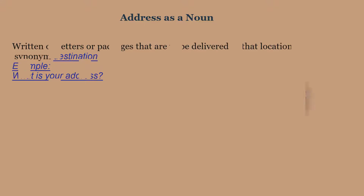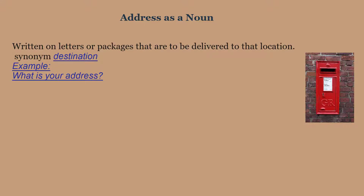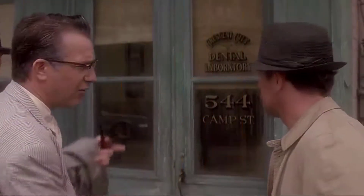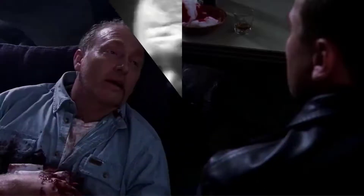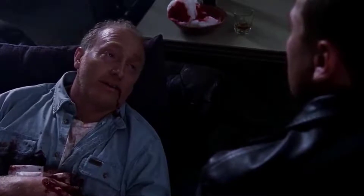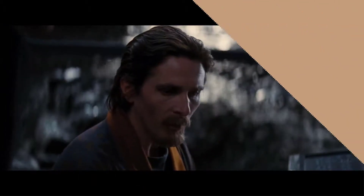As a noun, 'address' is read on letters or packages to be delivered to that location. Synonym: destination. Example: 'What is your address?' Second meaning: it is a speech. Example: 'He was asked to give a formal address at the ceremony.' Because this office address was stamped on the pro-Castro leaflets he was handing out. '63 down on Canal Street — I gave you the wrong address, but you showed up at the right one, didn't you?' So I cross-referenced the address.